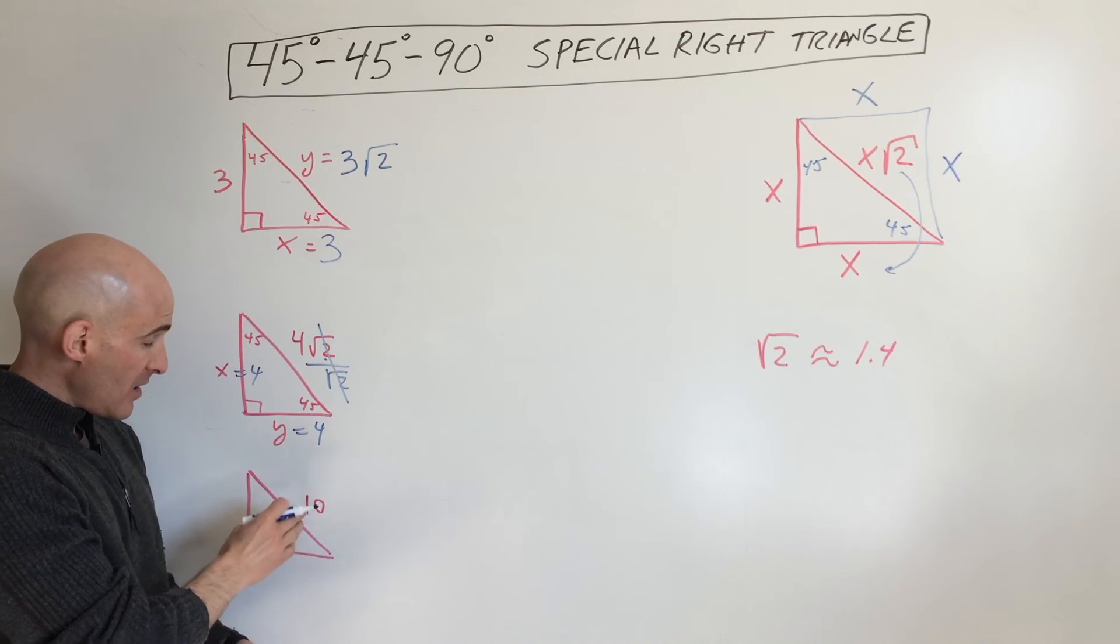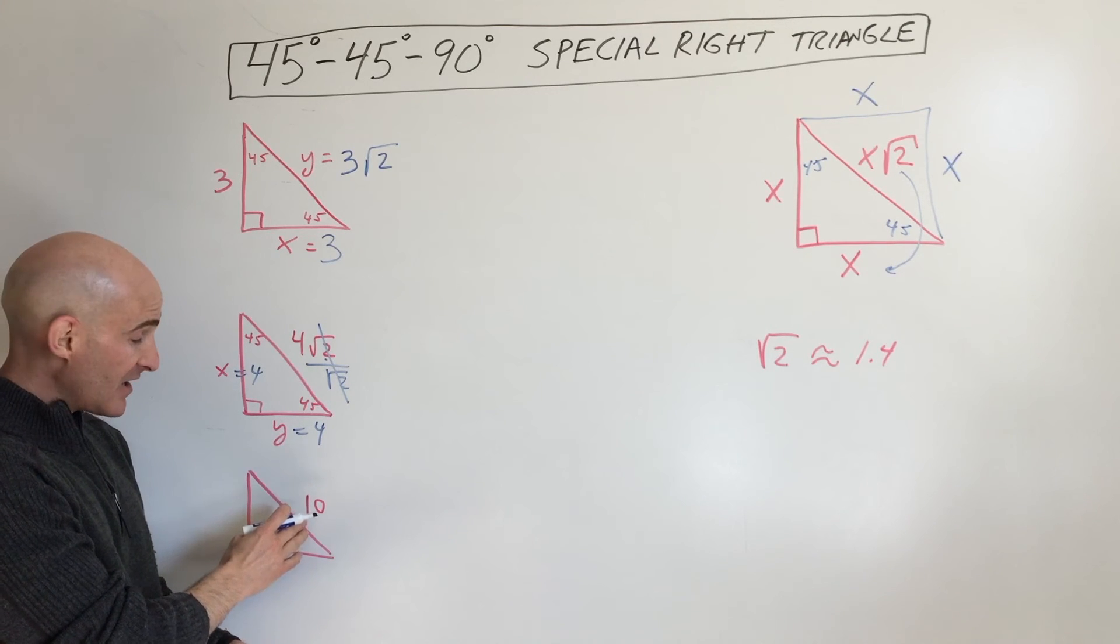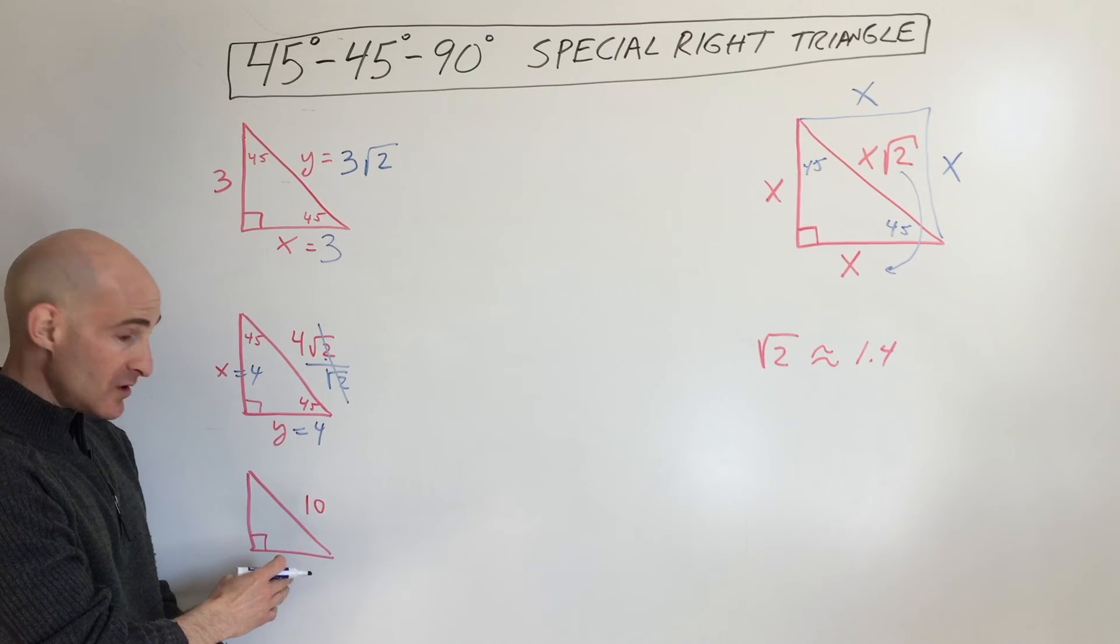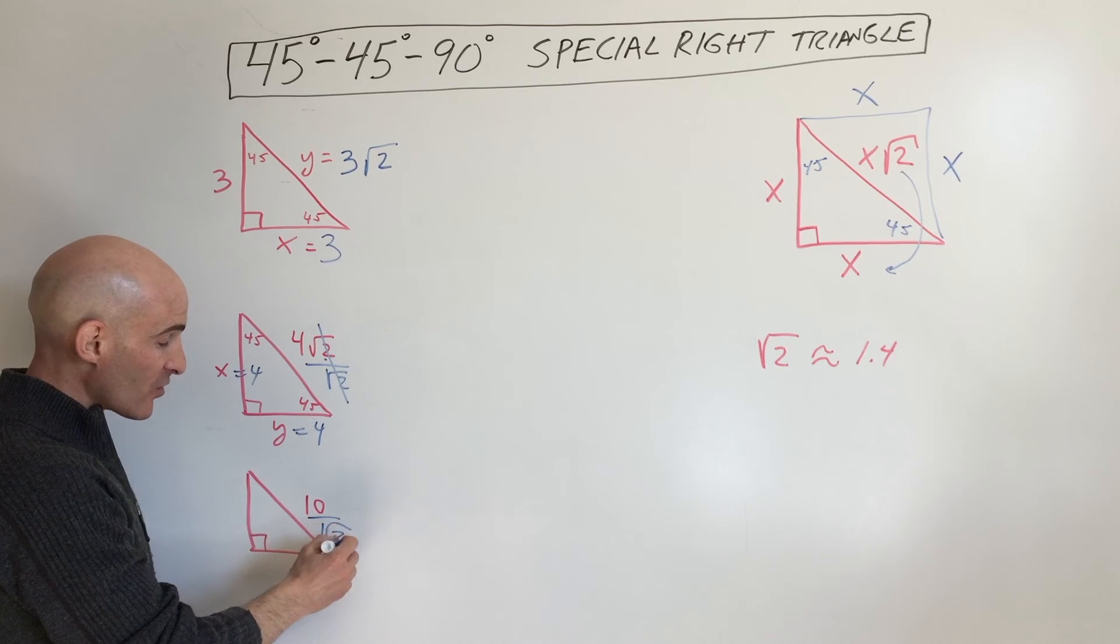Okay, last example here. We've got a 45, 45, 90. They're giving us the hypotenuse is 10. How do we go from the hypotenuse back to one of the legs? Well, what we're going to have to do is divide by the square root of 2.